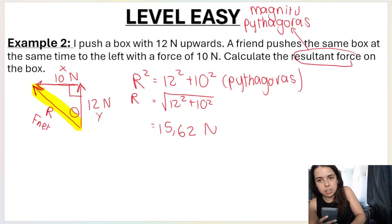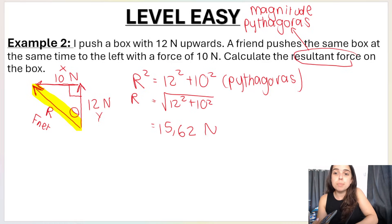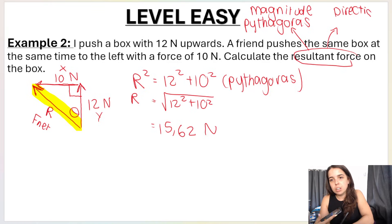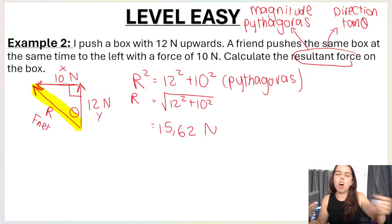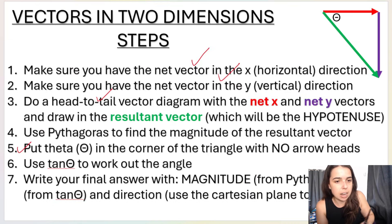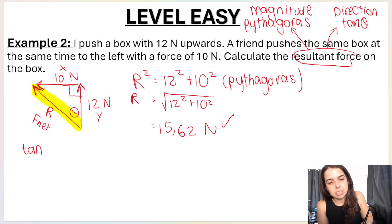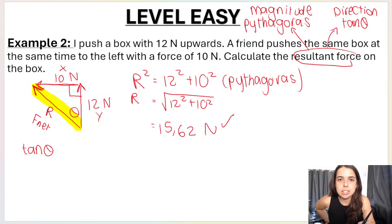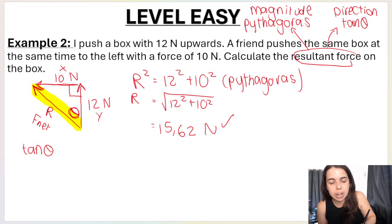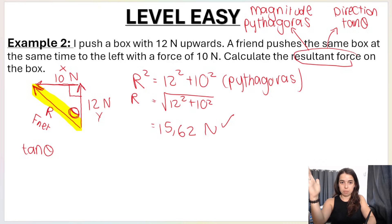The magnitude is 15.62 newtons — that's done. But because force is a vector, we can't just have a magnitude; we must have a direction as well. That's step six: use tan theta to work out the angle. The question students ask is: will we always use tan theta?